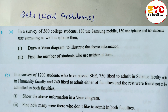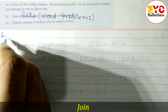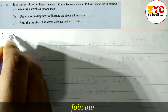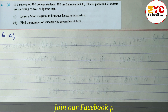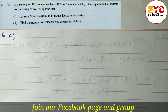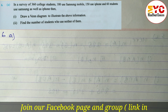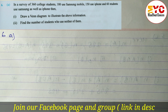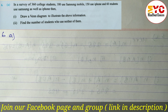Today we are going to learn questions related to the 'what problem.' Look at question number 6a. In a survey of 360 college students, the total number of students is equal to 360. 180 use Samsung mobile.